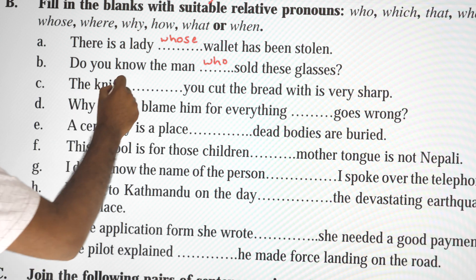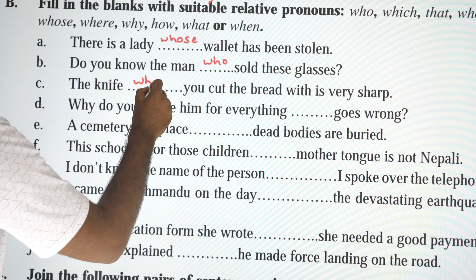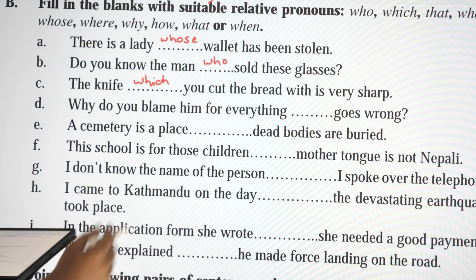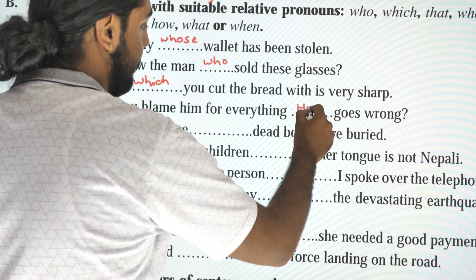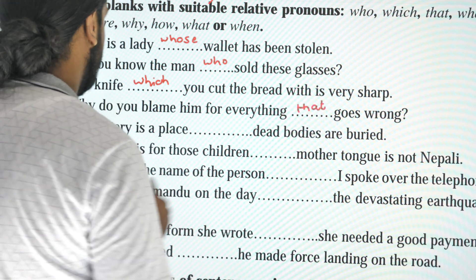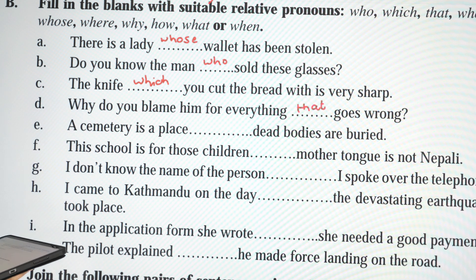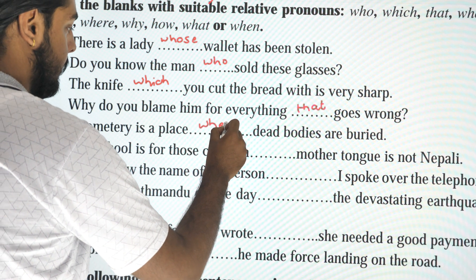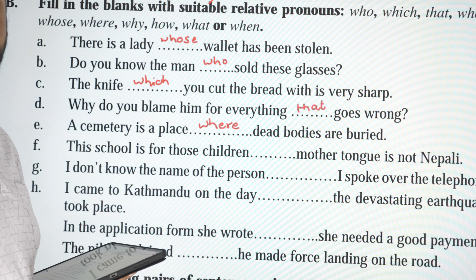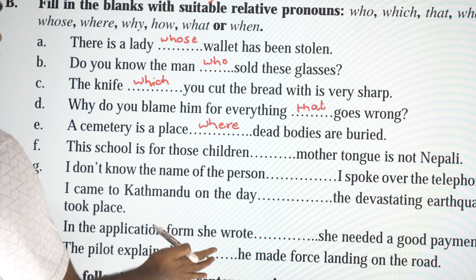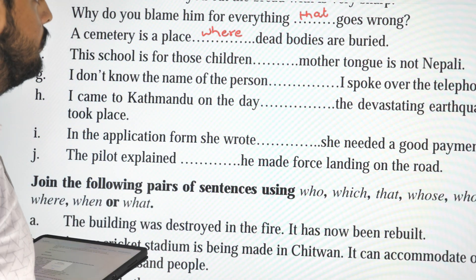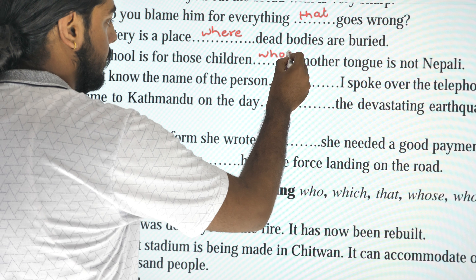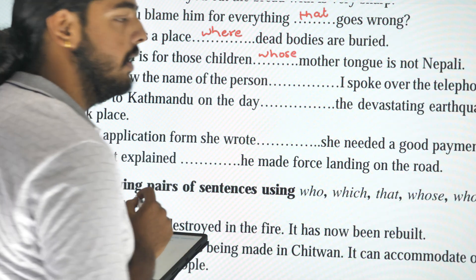'The knife that you cut the bread with is very sharp.' Also: 'The knife which you cut the bread with is very sharp.' Next: 'Why do you blame him for everything that goes wrong?' And: 'A cemetery is a place where dead bodies are buried.' Also: 'This school is for those children whose mother tongue is not Nepali.'